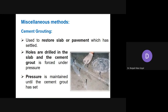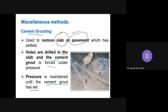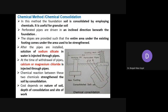Miscellaneous methods — first is cement grouting. This is used to restore slabs and pavements which have settled. Cement grout is a mixture of cement and water. Small holes are drilled in the slab, and then cement grout is forced in under pressure. The pressure is maintained until the cement grout has set, which restores the existing slab or pavement.